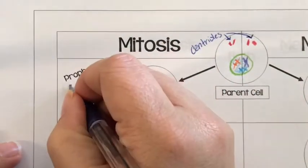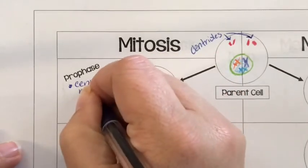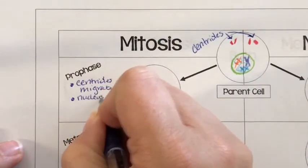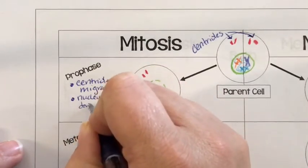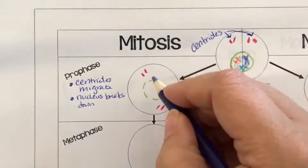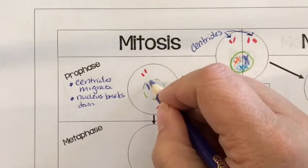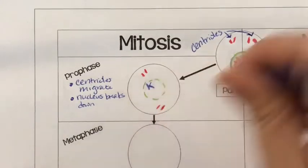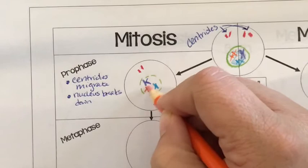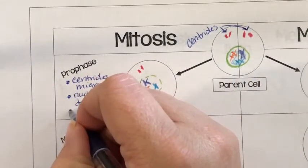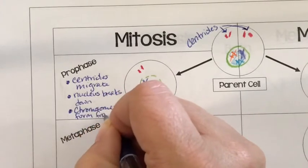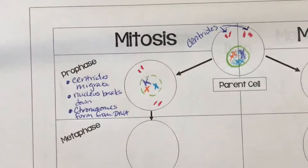So let's make a little note. So it's centrioles migrate. So we see them migrate to either end of the pole. Our nucleus breaks down. And then this really cool thing happens. We start to see our DNA, which was all loose and crazy over here, starts to wind up. And we get these homologous chromosomes. So DNA, or chromosomes form from our long, strung out DNA strands.